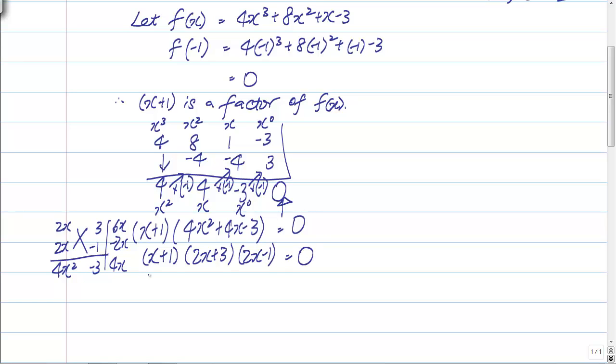Then, we can solve it. x plus 1 equals to 0, or 2x plus 3 equals to 0, or 2x minus 1 equals to 0. Therefore, x equals to minus 1, or x equals to negative 3 over 2, or x equals to half.